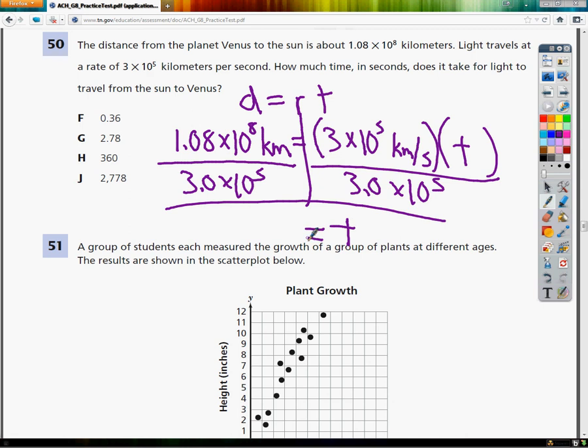So I just go back in and I do 1.08 times 10 to the 8th and divide that by 3 times 10 to the 5th. And it gives me 360. So the answer to number 50 is H.